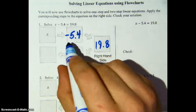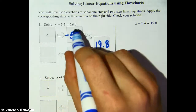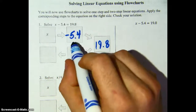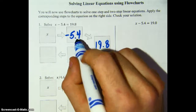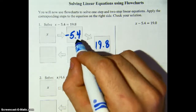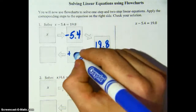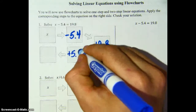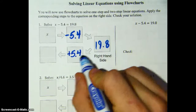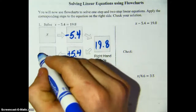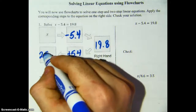Now to figure out what x is we have to undo this operation right here. We call that using an inverse operation. So what's the inverse of subtraction? It's addition. So we will add 5.4 to our 19.8 and get 25.2.